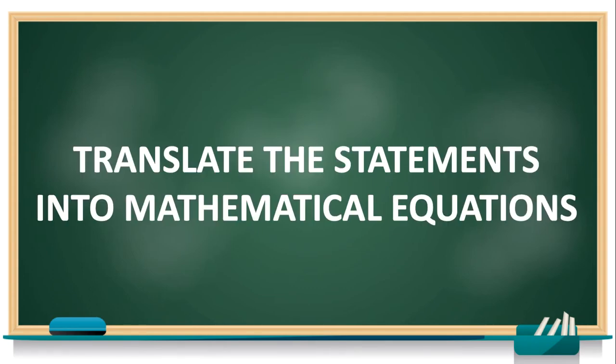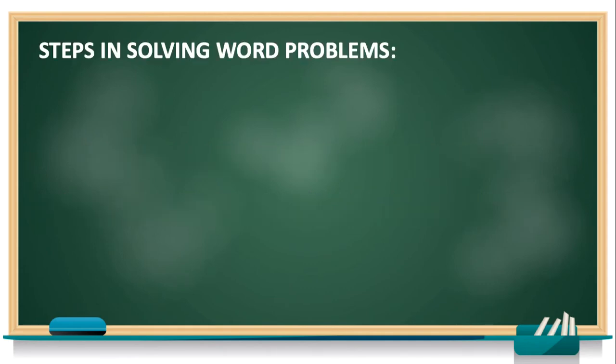Sometimes in solving word problems, we use a formula that describes the relationship between the quantities present in the problem. There are formulas for perimeter, area, circumference, volume, and a lot more. But more often, formulas are not given in the word problems, so before we can find the solution, we first need to translate the statements into mathematical expressions. To help you organize your solution to any kind of word problems, the following steps can help you.